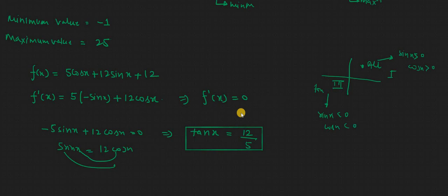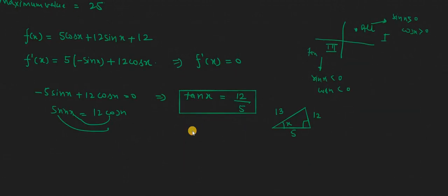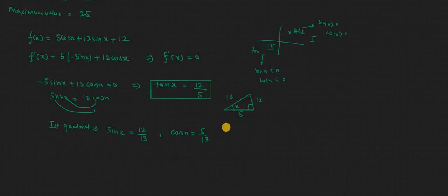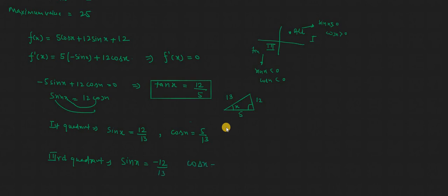We find the values of sin(x) and cos(x) using a right-angle triangle, where the opposite side is 12, adjacent is 5. Using the Pythagorean theorem, the hypotenuse is 13. For the first quadrant: sin(x) = 12/13, cos(x) = 5/13. For the third quadrant: sin(x) = −12/13, cos(x) = −5/13.